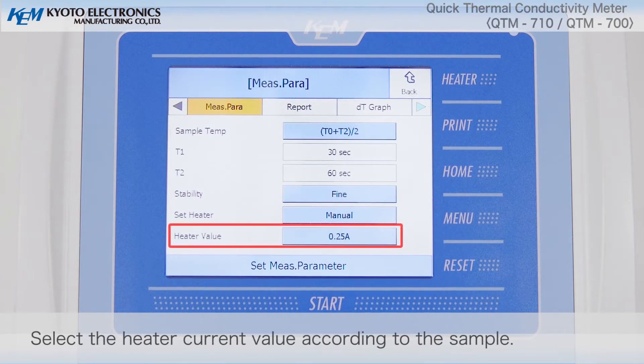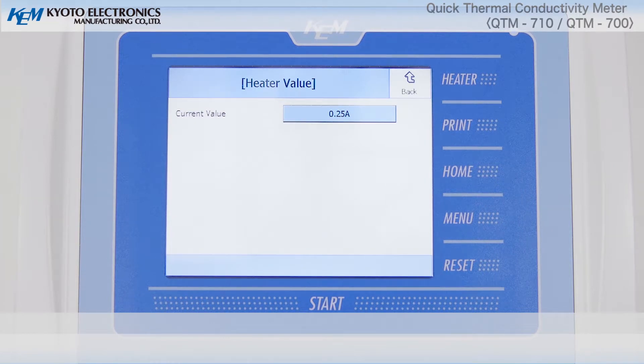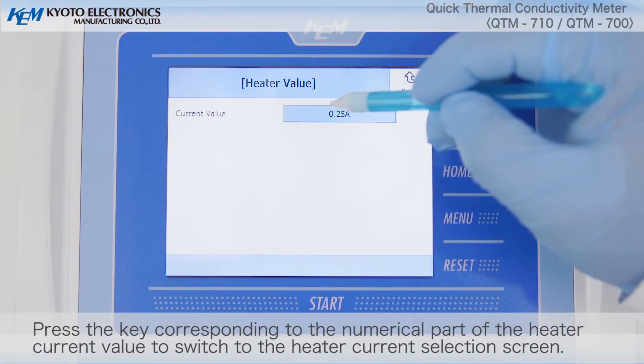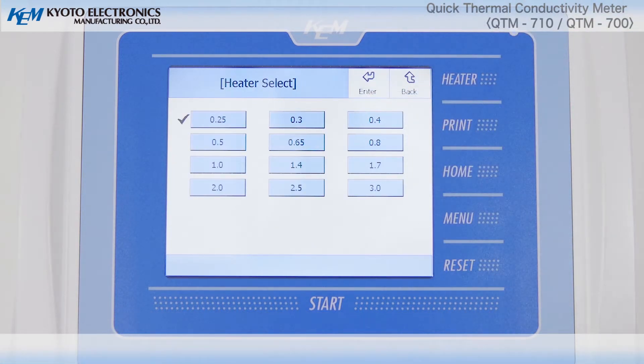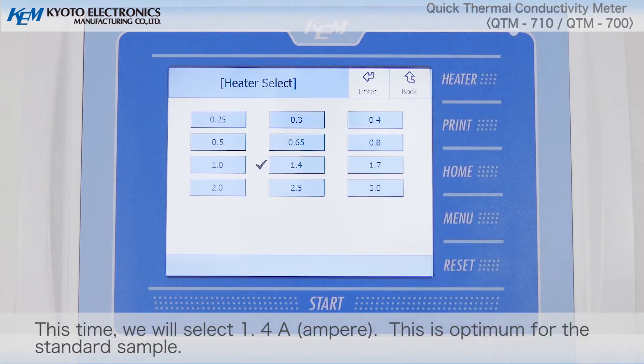Select the heater current value according to the sample. Press the key corresponding to the numerical part of the heater current value to switch to the heater current selection screen. This time, we will select 1.4 ampere. This is optimum for the standard sample.